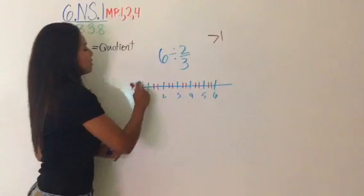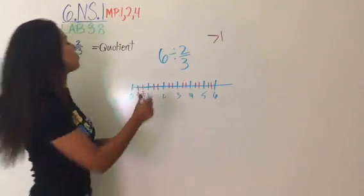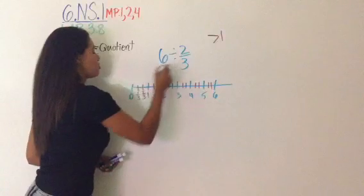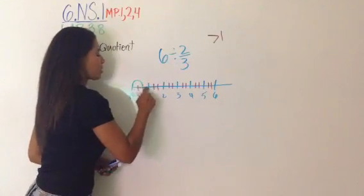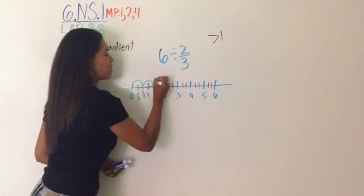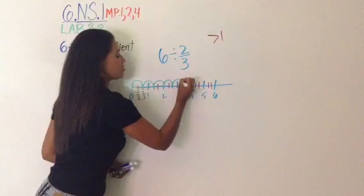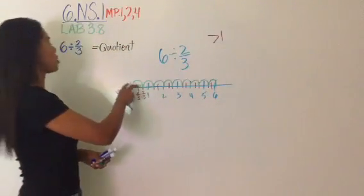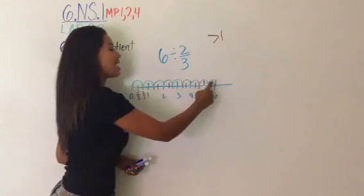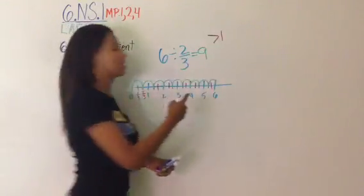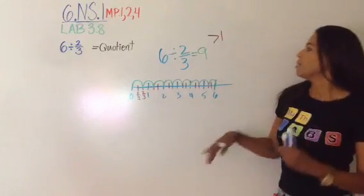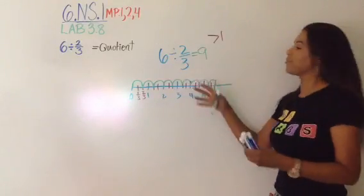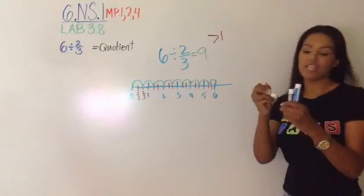Now we make our jumps — like the grasshopper — and see how many groups of 2/3 are in 6. Each jump covers 1/3 + 1/3 = 2/3. I'll draw these humps in green: jump 1, 2, 3, 4, 5, 6, 7, 8, 9. That gives us 9 groups of 2/3 in 6. So our quotient is 9, and we're going to check it using the standard algorithm.